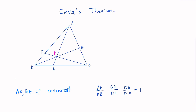Given a triangle ABC, if I have points D, E, F such that the cevians AD, BE, CF are concurrent at point P, we're going to have this relation: AF over FB times BD over DC times CE over EA equals 1. That's the theorem.